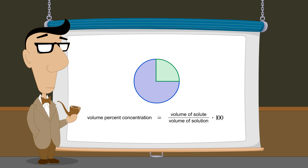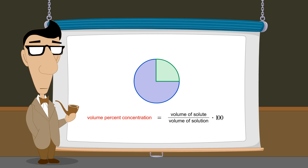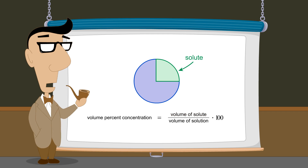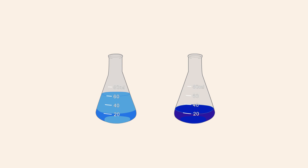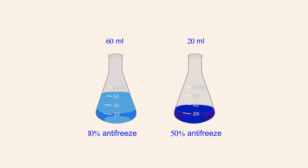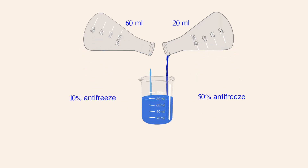Given this relationship between the volume percent concentration, the volume of solute, and the volume of the solution, we can calculate any one of these three quantities if we know the values of the other two. Now, let's say that we have two flasks of antifreeze solution. One solution contains ten percent antifreeze and the other contains fifty percent antifreeze. If we mix sixty milliliters of the ten percent solution with twenty milliliters of the fifty percent solution, what will be the percentage of antifreeze in the mixture?